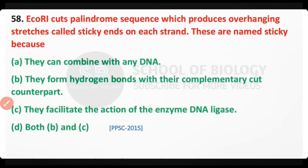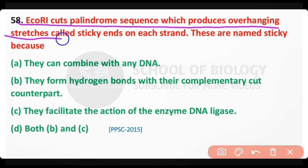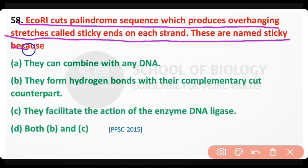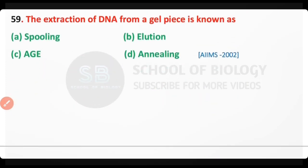Question number 58: EcoRI cuts the palindrome sequence, which produces overhang stretches called sticky ends on each strand. These are named sticky because they can combine with any DNA. The correct answer is option A.